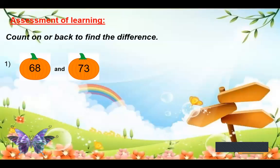Now assessment of learning. Here count on or back to find the difference. 68 and 73. Children, here you can use any method: counting on or counting back. You can count on from 68 to 73 or you can count back from 73 to 68. So the first one I will explain you. From 68 you are counting on to 73.